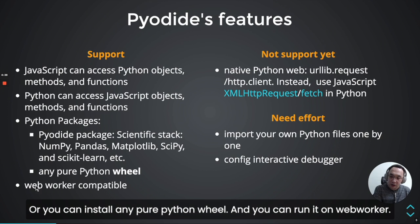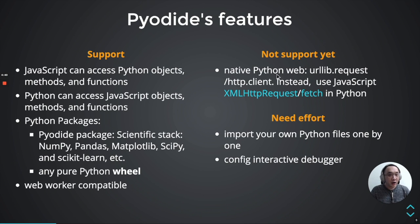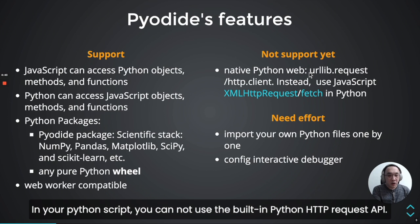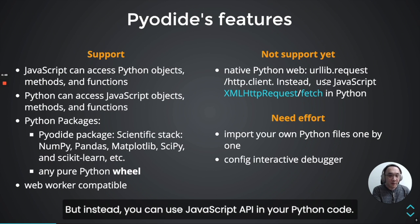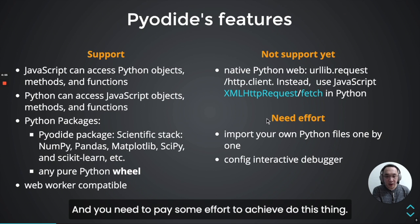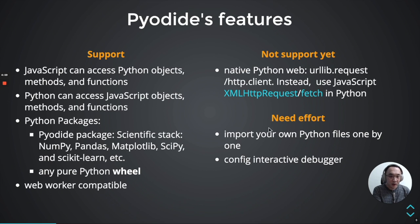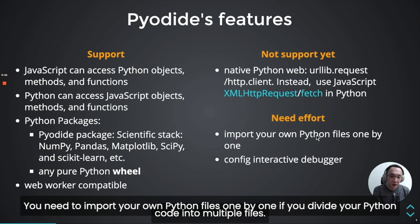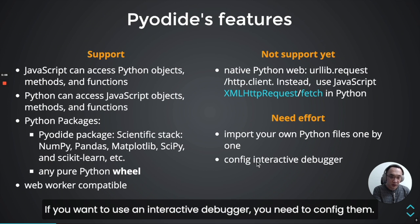One key point: in your Python code, you cannot use the built-in Python HTTP request API; instead, you can use the JavaScript API in your Python code, though you need to pay some extra effort to achieve this. You also need to import your own Python files one by one if you divide your Python code across multiple files. If you want to use an integrated debugger, you need to complete some additional steps.